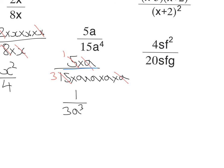So 4sf² over 20sfg. There's an s on the top I can cancel, there's an f and I can cancel one of the f's, and I can divide through by 4 — leaving a 1 and a 5. So I'm left with f on the top, and on the bottom 5 and g, so f over 5g.